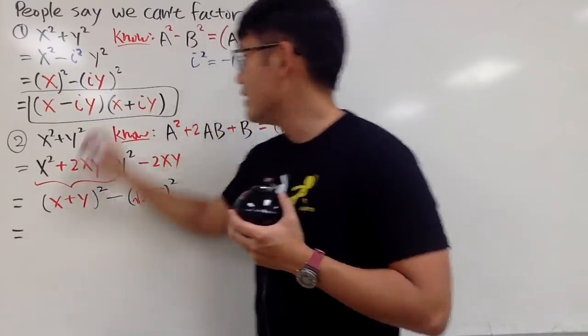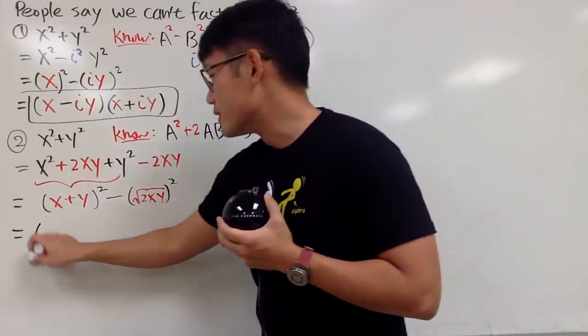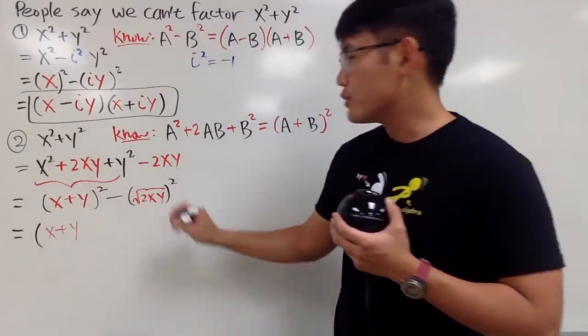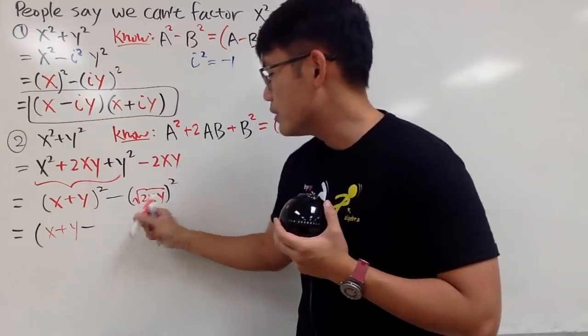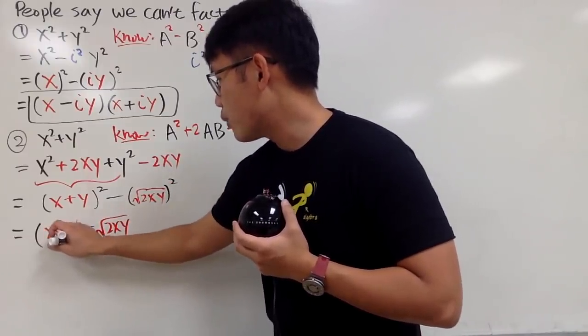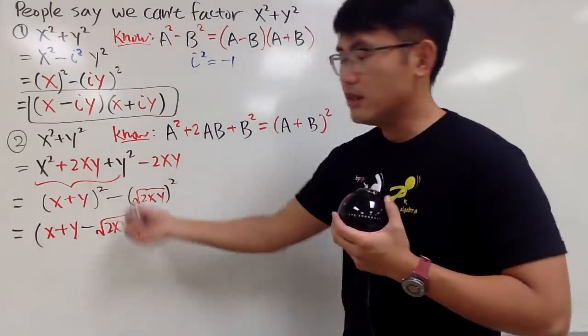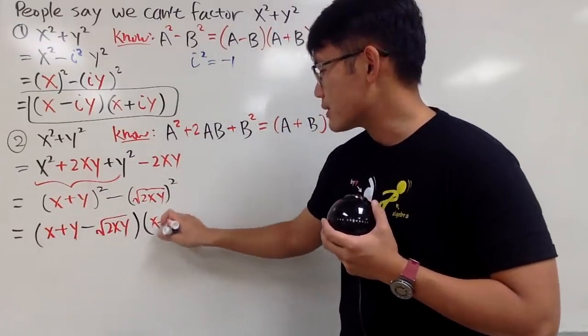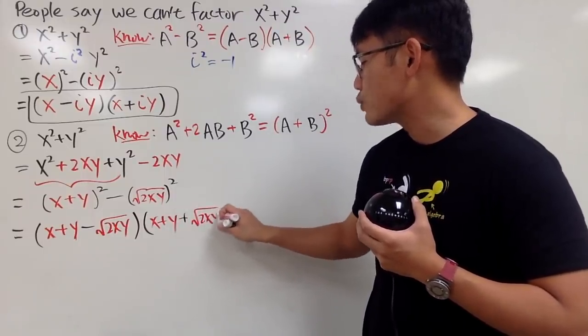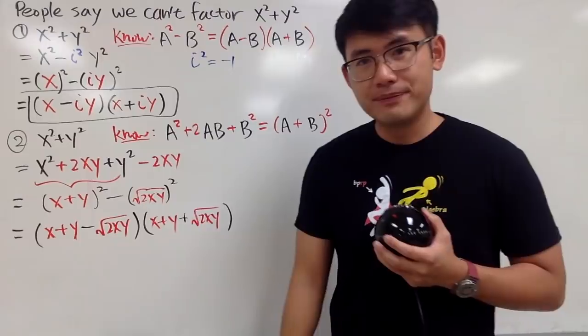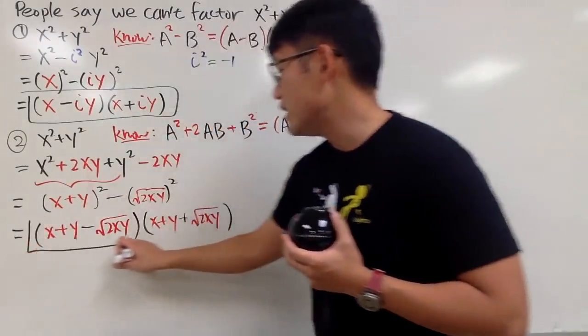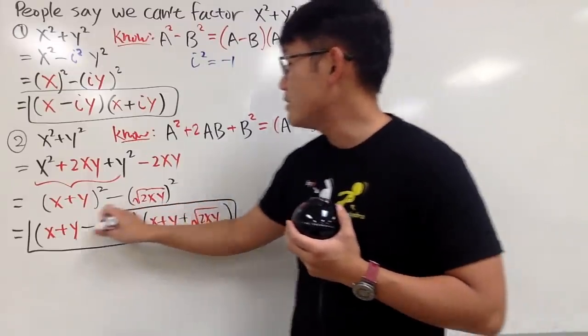And now, of course, we can just apply this right here to help us out. And we will see this right here is just x plus y. And we will just have to minus this part, which is square root of 2xy. And that will be the first factor. For the second factor, it's pretty much just x plus y. And we add square root of 2xy. And guess what? We just factor this guy in the real world. But unfortunately, this is not in the polynomial world. But it's still legit.